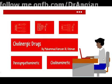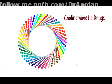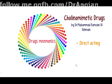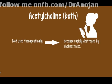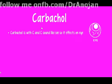Neostigmine and physostigmine are carbamates. Edrophonium is an alcohol. Organophosphates include parathion and malathion, recognizable by 'thion' at the end of their names. Moving to individual direct acting cholinomimetics: acetylcholine acts on both muscarinic and nicotinic receptors but is not used clinically because it is rapidly destroyed by cholinesterases. Carbachol - 'C' sounds like ice - is used in glaucoma treatment.